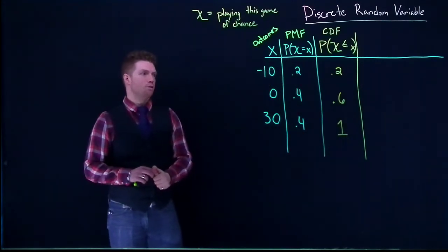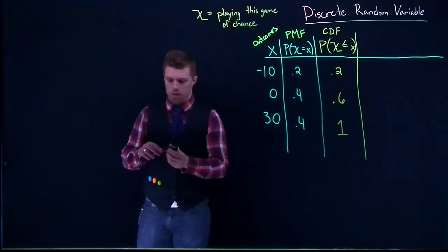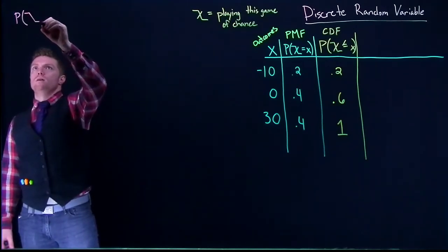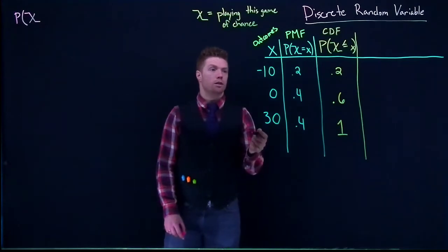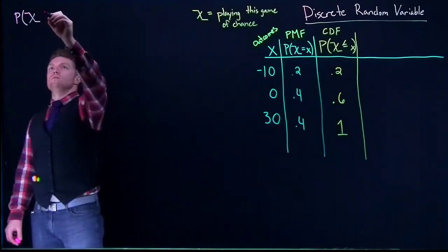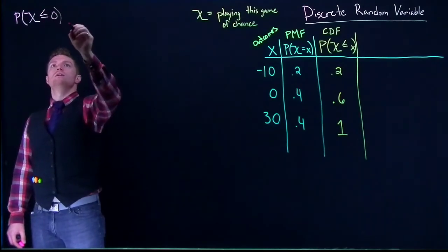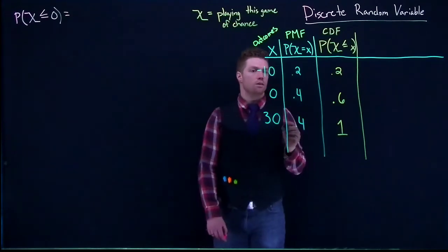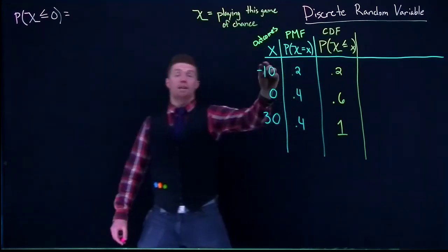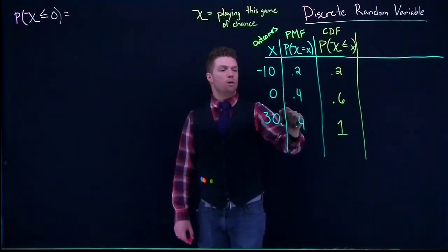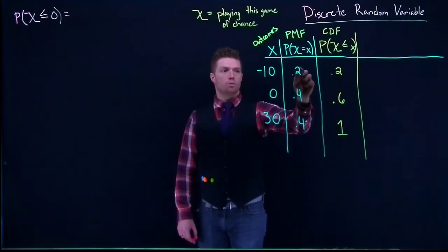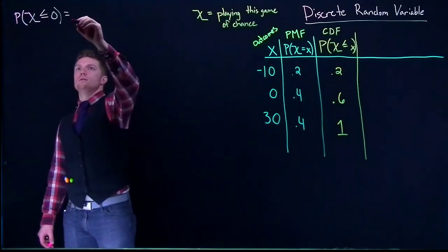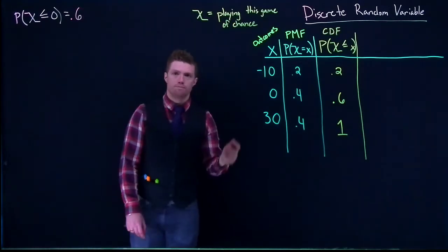A question we might ask: what is the probability that our winnings are going to be less than or equal to 0? We can pull this directly from the CDF. The outcomes -$10 and $0 are both less than or equal to 0, and their probabilities sum to 0.4 + 0.2 = 0.6. We can also just look at the CDF value directly, which gives us 0.6.